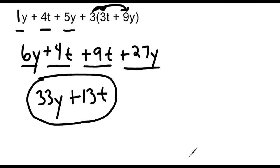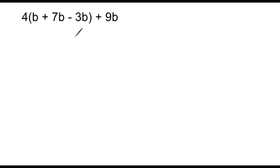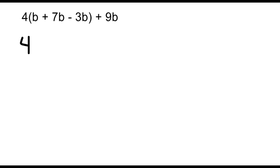Let's try another example. This time we have three terms inside parentheses and a term at the end. Notice inside the parentheses we have three things that are like terms. So before we use the distributive property, we can combine whatever we can inside the parentheses. Because they're all b terms, we combine all three: 1b plus 7b is 8b, and 8b take away 3b gives us 5b.